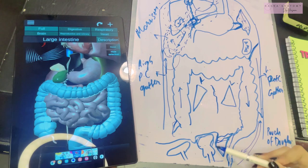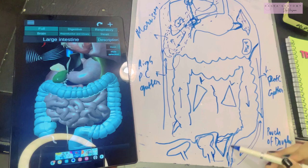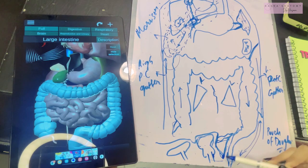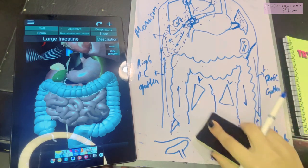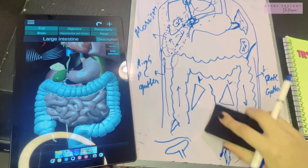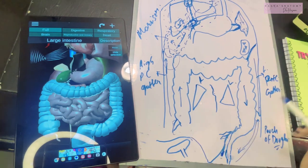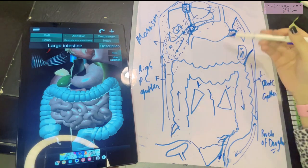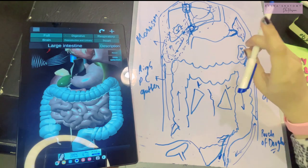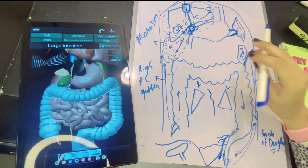The boundaries of the pouch of Douglas are: anteriorly the uterus and the posterior fornix of the vagina; posteriorly the rectum; and inferiorly a fold of peritoneum known as the rectovaginal fold. This description applies to females. In males, the uterus is absent, so the equivalent space is known as the rectovesical pouch, which holds similar clinical importance.